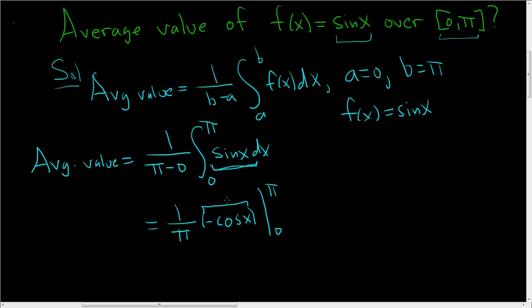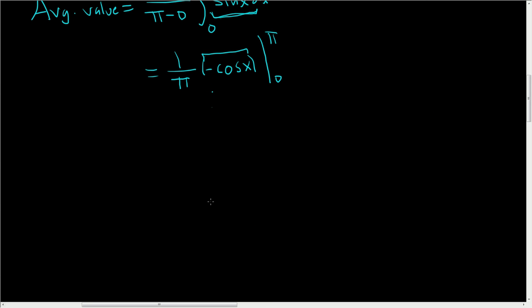Let's be really careful here, because it's very easy to mess up. So this is equal to 1 over pi. So first we plug in the pi. This one gets plugged in first. So we get negative cosine pi minus parentheses negative cosine 0.